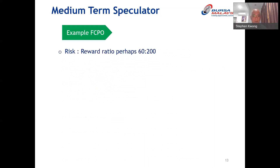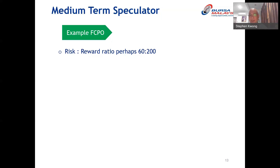Unlike the scalper's 3-to-10 ratio, the medium-term speculator allows a bigger range movement. Anytime the market goes against a medium-term speculator by 60 points, they get out. They will only start thinking about taking profit when they are 200 points up. This risk-reward ratio is in tandem with the price range of the product — that is why it's important to first establish what the price range is before coming up with a viable risk-reward ratio.